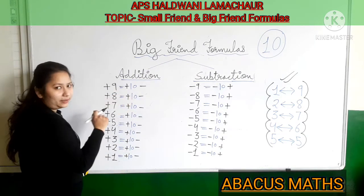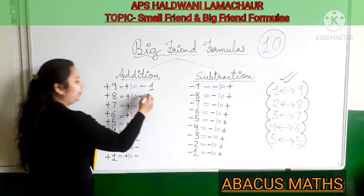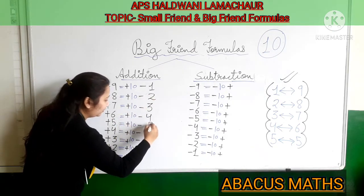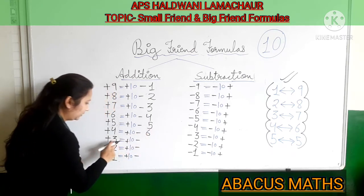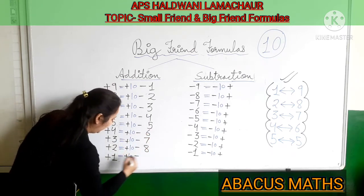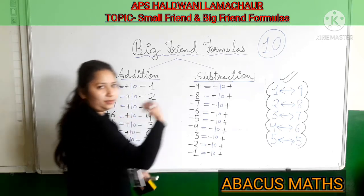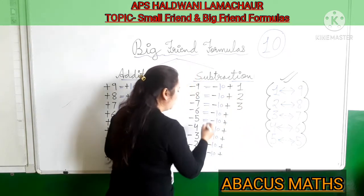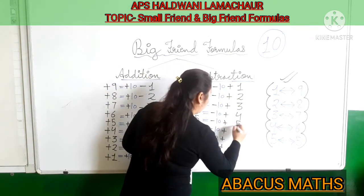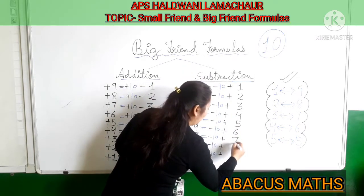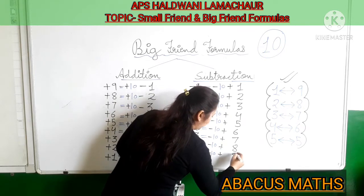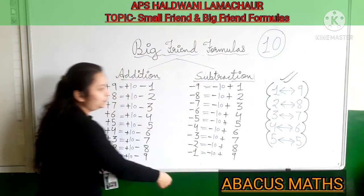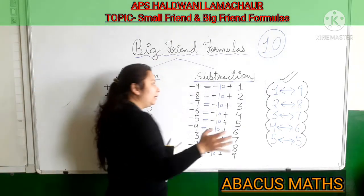Who is the friend of 9? 1. Friend of 8? 2. Friend of 7? 3. Friend of 6? 4. Friend of 5? 5. Friend of 4? 6. Friend of 3? 7. Friend of 2? 8. Friend of 1? 9. This way we can create these Big Friend formulas by ourselves by only learning these two things: just keep it in mind that 10 always goes with the number — if number is plus then 10 is plus — and 10 and the friend are always enemies. If you are adding 10 then the friend will be minus, and if you are subtracting 10 then the friend will be plus.